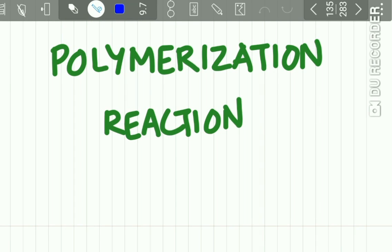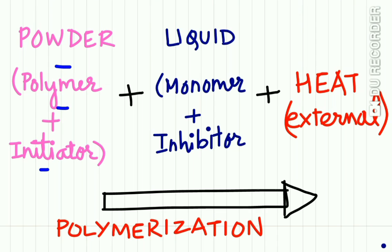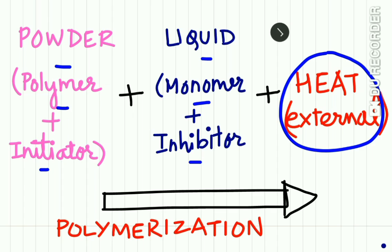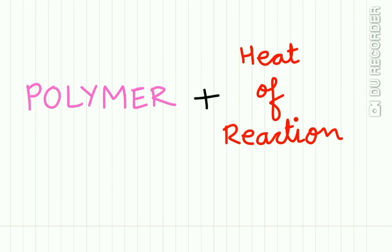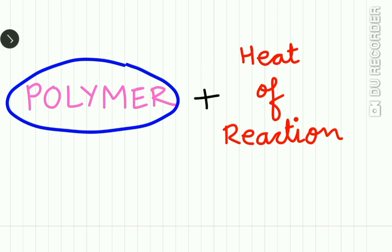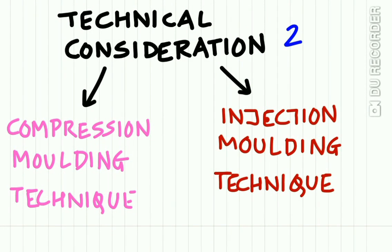In the polymerization reaction, the powder containing the polymer and an initiator is mixed with the liquid containing the monomer and an inhibitor. When external heat is applied, polymerization occurs, resulting in the formation of a polymer and liberation of heat of reaction. There are two methods for using this heat activated denture base resin: the compression molding technique and the injection molding technique.